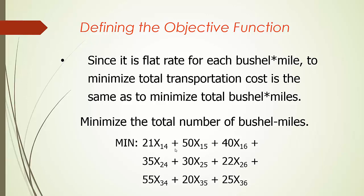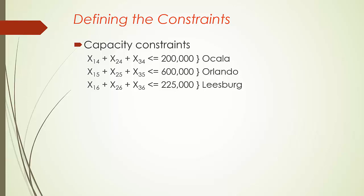Next, let's see how we are going to formulate all those constraints. First, let's look at the capacity constraints. We have three processing plants in locations 4, 5, and 6. The total number of bushels received in location 4 should be no more than its capacity of 200,000. The total bushels location 4 receives must come from locations 1, 2, or 3, so the constraint is: x14 plus x24 plus x34 must be less than or equal to 200,000. Similarly, we can formulate capacity constraints for location 5 (Orlando) and location 6 (Leesburg).